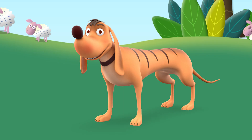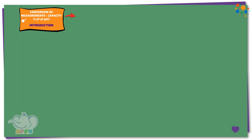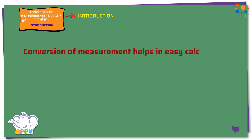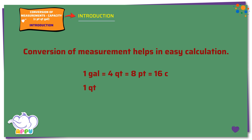Are you ready? You bet I am! Conversion of measurement helps in easy calculation. We already know these: 1 gallon equals 4 quarts equals 8 pints equals 16 cups. 1 quart equals 2 pints equals 4 cups. 1 pint equals 2 cups.